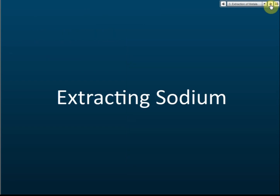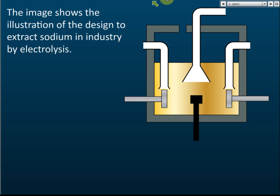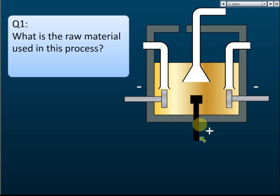Let's start with extractions of sodium. This is the illustration of the industrial setup to extract sodium. From here we can see the electrodes — this one is the positive electrode and these two are the negative electrodes. So we have positive and negative electrodes here.